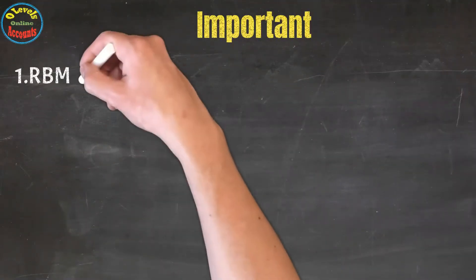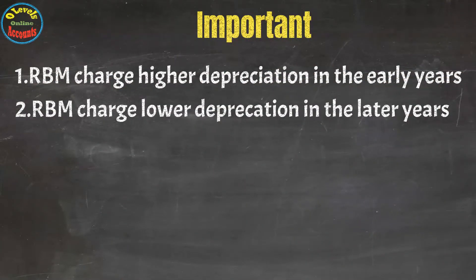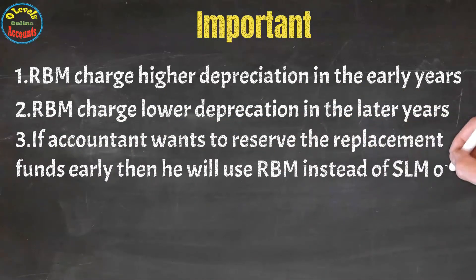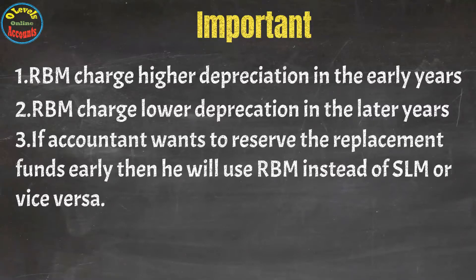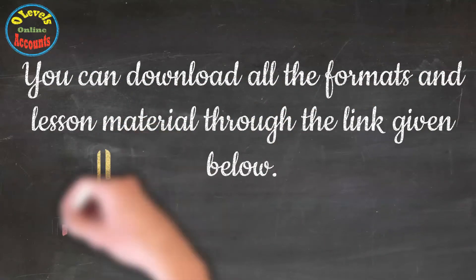There are some important points for RBM. Number one: RBM charges higher depreciation in the early years. In the example, first year depreciation was $6,000 and the last year was $384. Further, if an accountant wants to reserve replacement funds early, he will use RBM instead of SLM, or vice versa — it depends upon company policy. Hopefully you now have a clear understanding of the reducing balance method. If you have any query, kindly ask in the comment section. You can download related formats and lesson material through the link provided below.